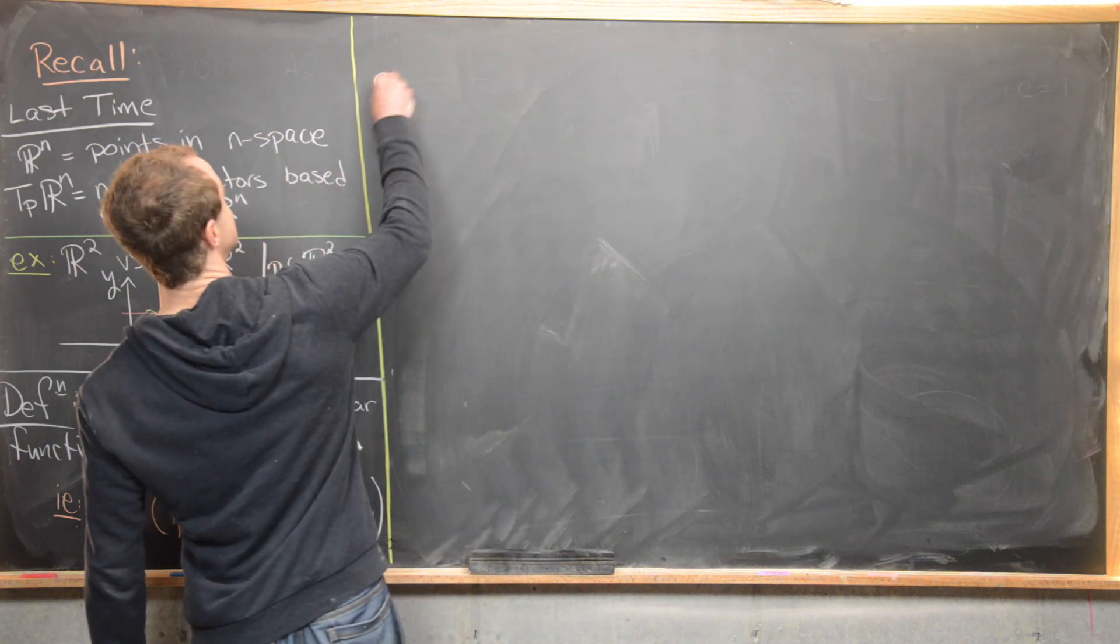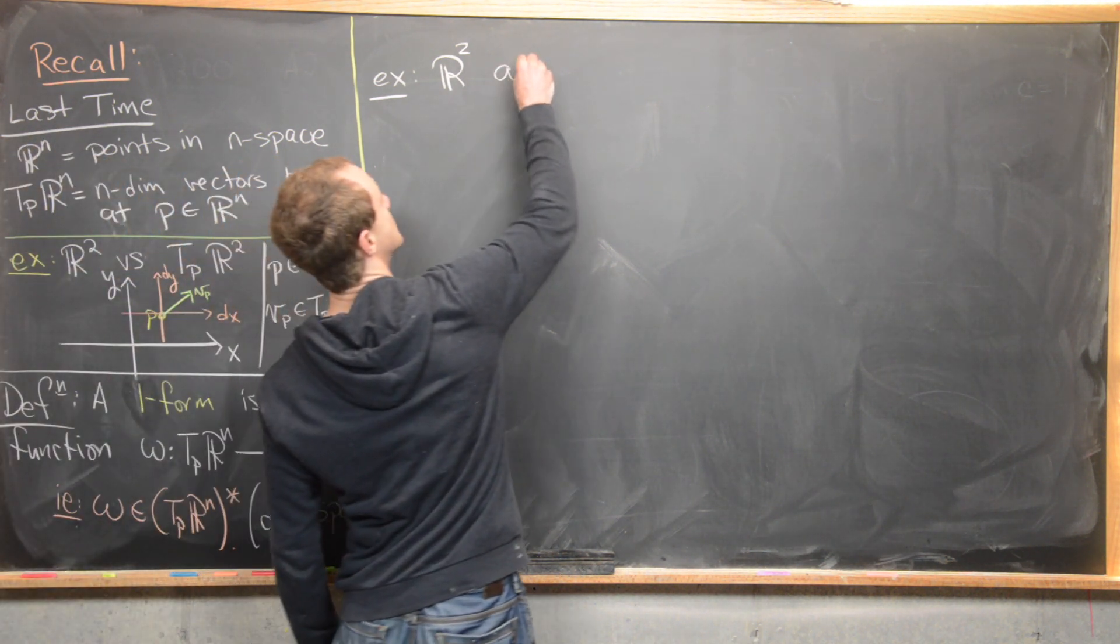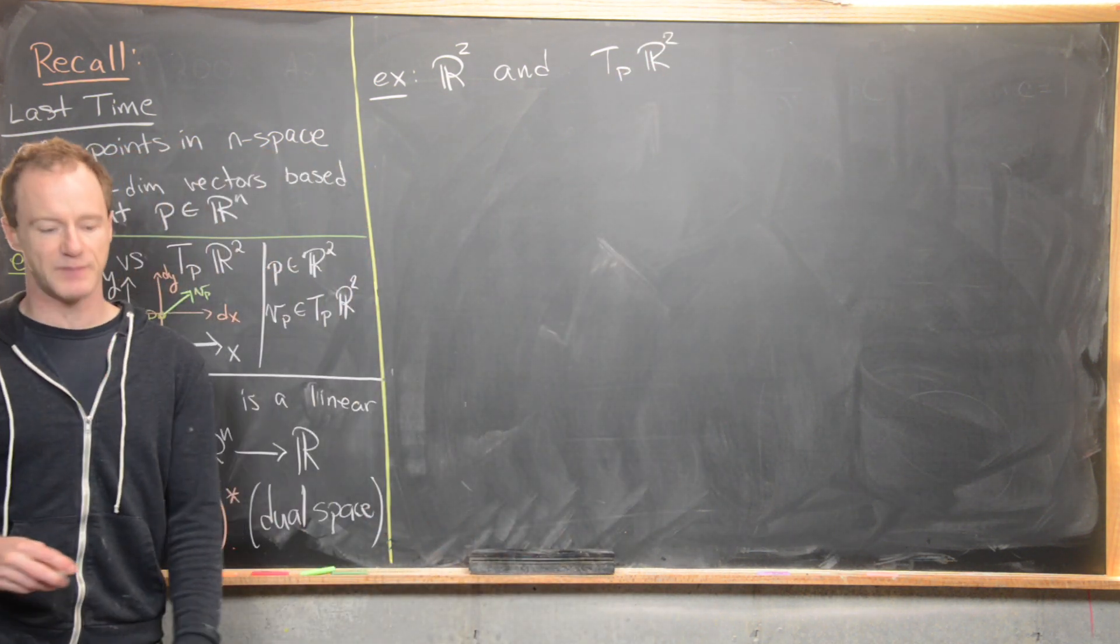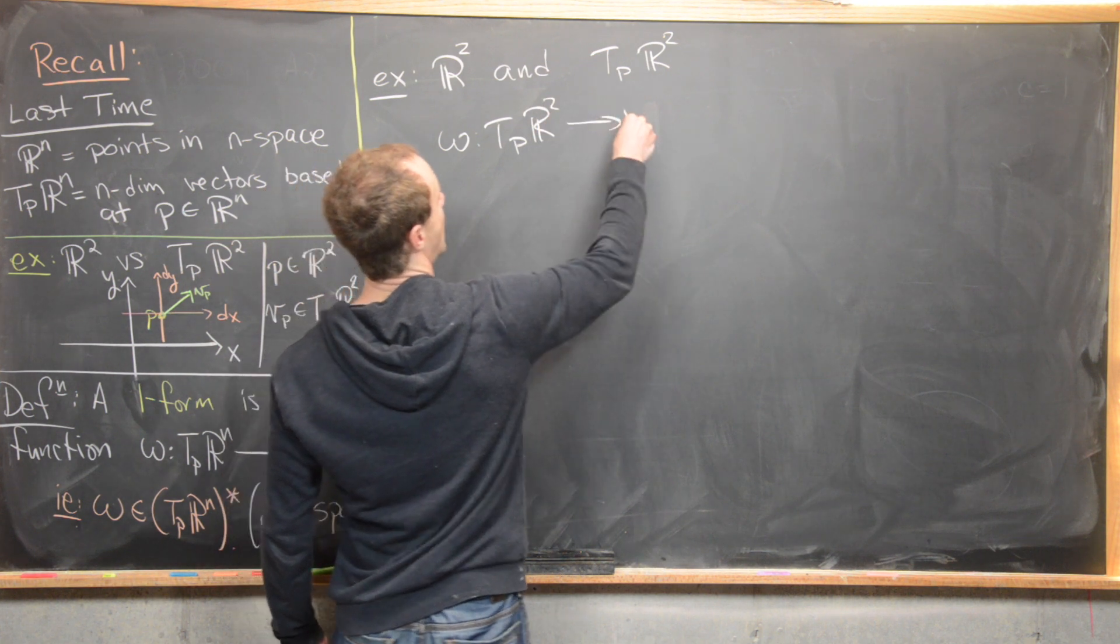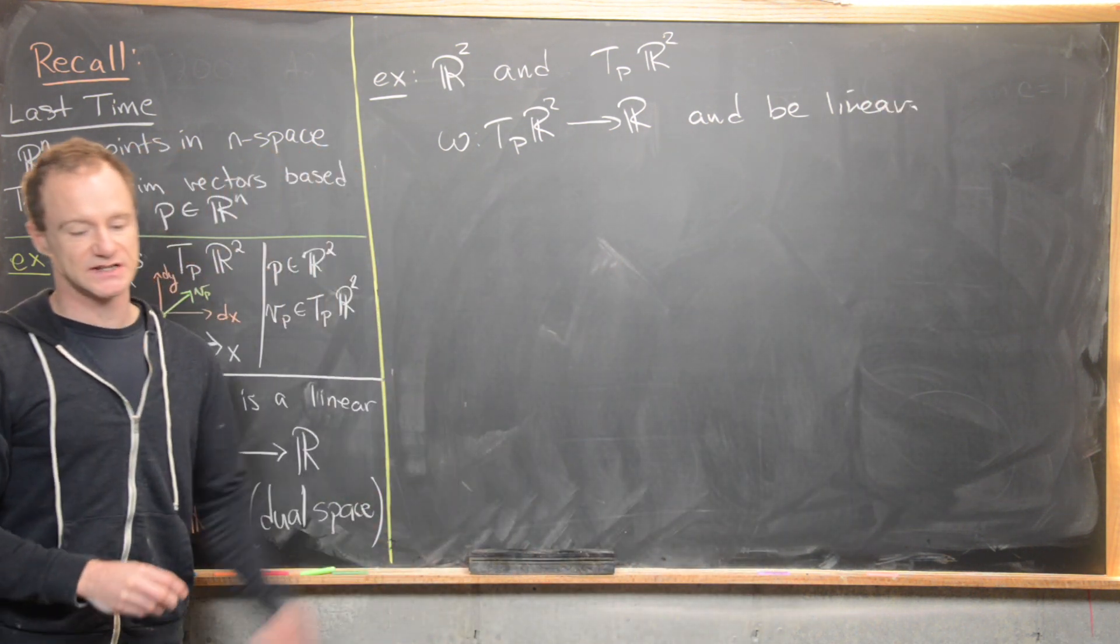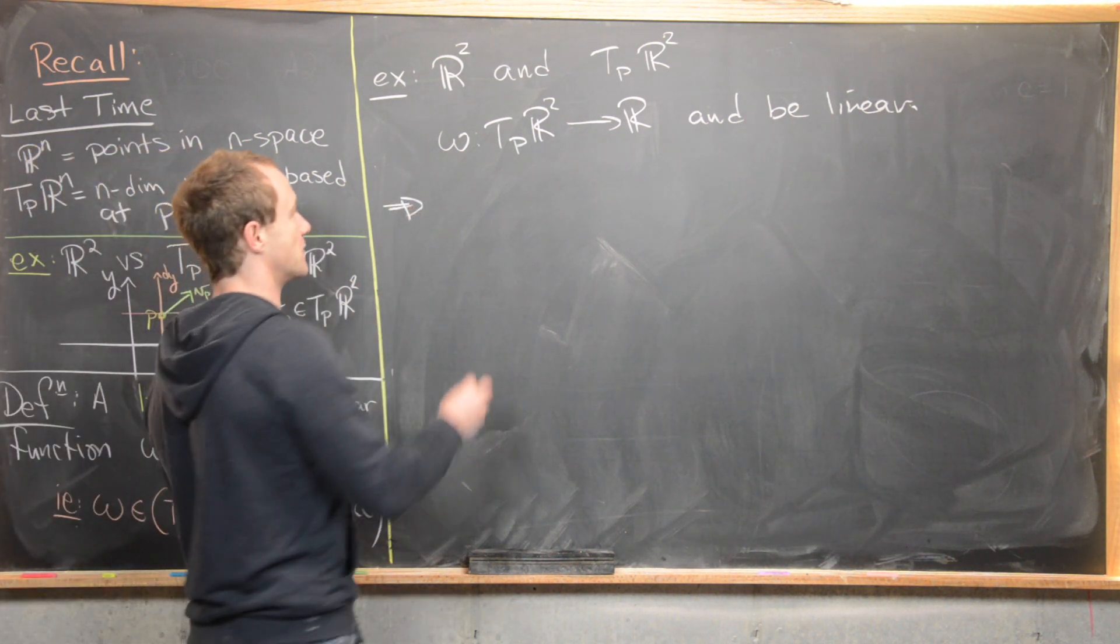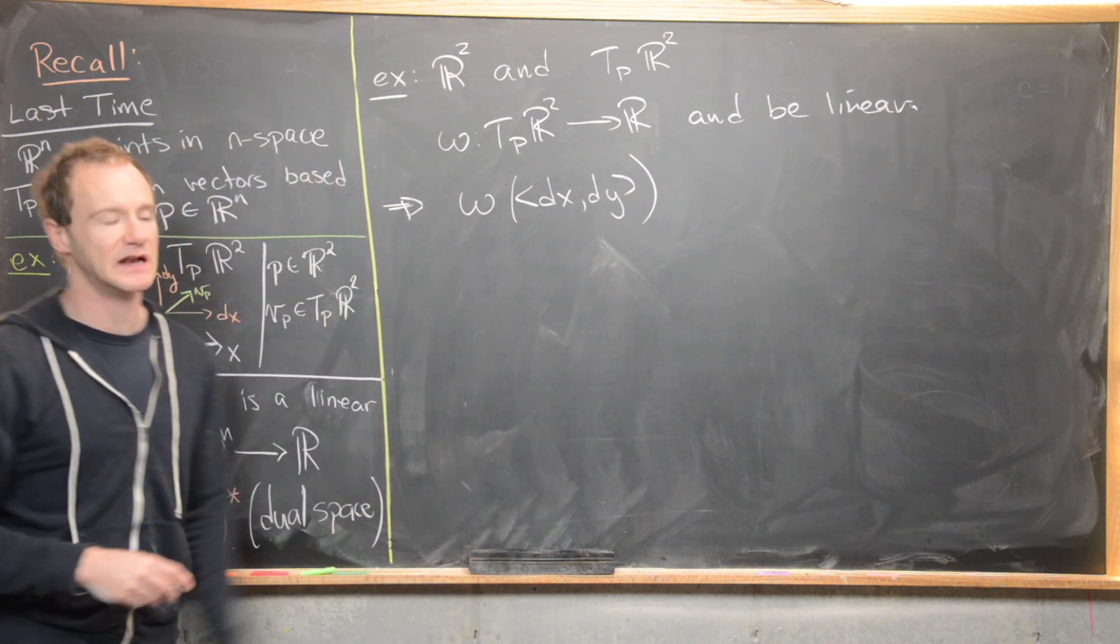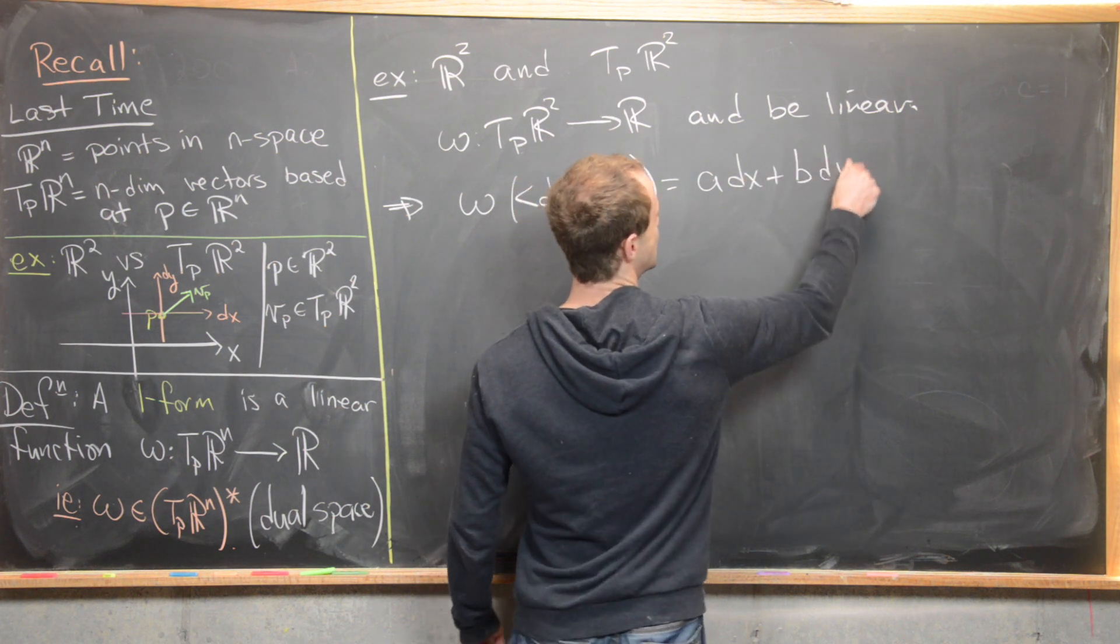So now let's look at a basic example here. Let's look at our example of R^2 and then T_p of R^2, the tangent space of R^2 based at p. So if we want omega to go from T_p R^2 up to R and be linear, that restricts it to a very special setup. That means that omega has the following form. If omega takes an element from T_p R^2, we'll just call that dx dy, kind of like we did in the last video.